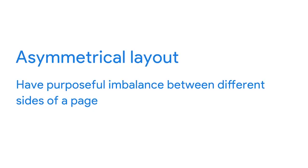Let's explore some more popular website layouts. Up next: asymmetrical layouts. Asymmetrical layouts have purposeful imbalance between different sides of a page. You may use an asymmetrical layout to place emphasis on certain parts of the page, such as images or headlines. Two common types of asymmetrical layouts are F shape and Z shape, which get their names from the path that the user's eyes usually follow across the page.